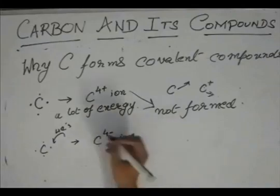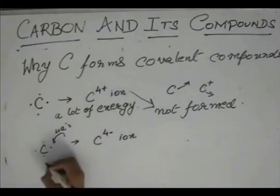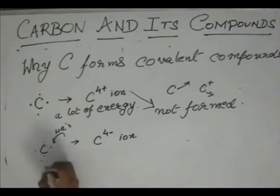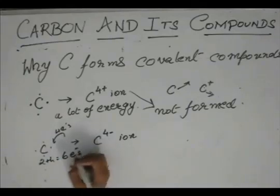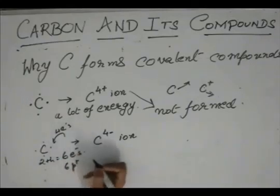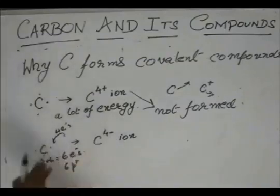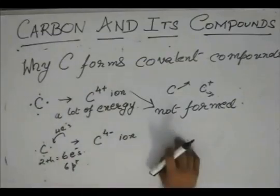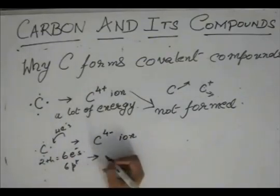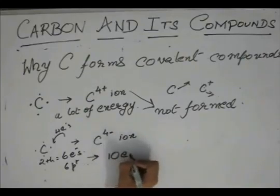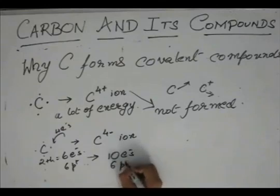Now this C4- ion, you already have two plus four, you already have six electrons and six protons, and another four electrons are coming. So there are a total now of ten electrons and there are still six protons.